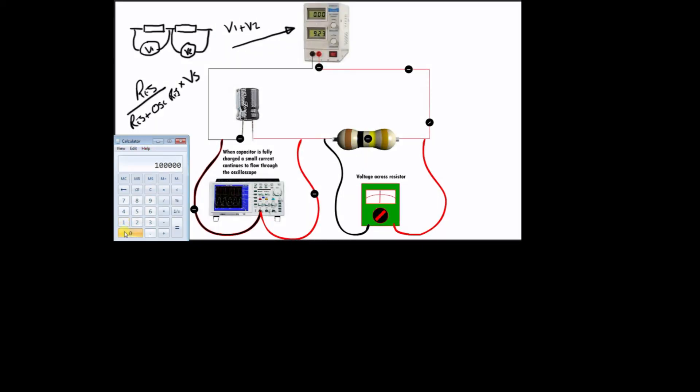We will do that in a calculator. The resistance in this circuit is 100,000 ohms. And that will be divided by 1,000,000, which is the input resistance or impedance of the oscilloscope, plus 100,000.